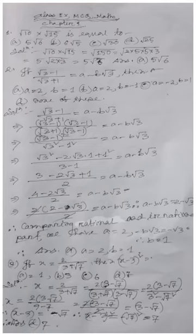The denominator is 2. The numerator is 3 + 1 − 2√3 = 4 − 2√3. So we have (4 − 2√3)/2. Taking 2 as common from the numerator: 2(2 − √3)/2 = 2 − √3. This equals a − b√3.